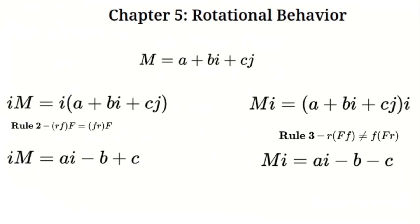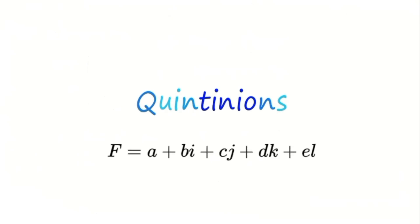We just built a 3D number system that Hamilton never found — Mokabians. But this is just the beginning. What happens if we extend this concept to five dimensions? In the next video, we'll introduce quintinions, a five-dimensional number system built on the foundation of Mokabians. Subscribe now because we're just getting started.